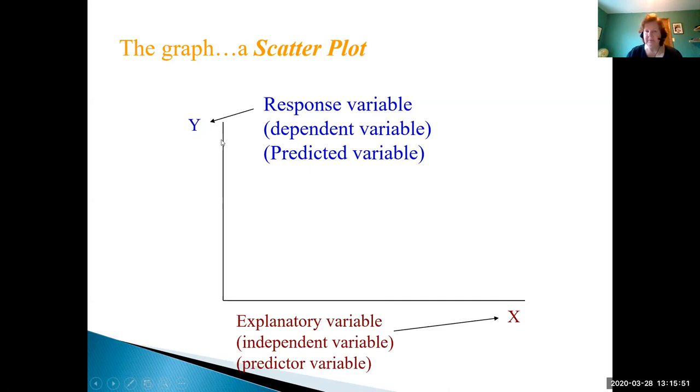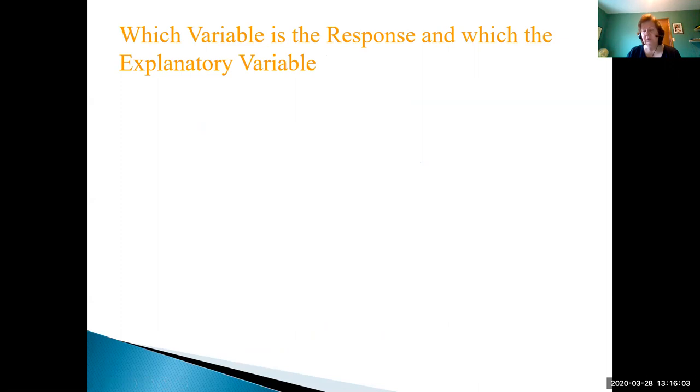And y therefore is called the response or the predicted variable. Usually the easiest terms are response variable and explanatory variable. So when we have a pair of quantitative variables, we have to figure out which is the response and which is the explanatory.